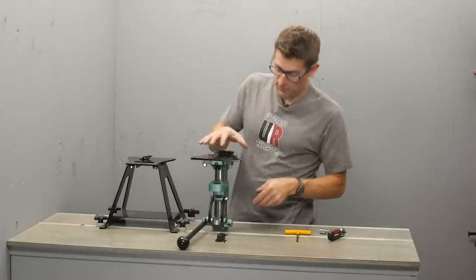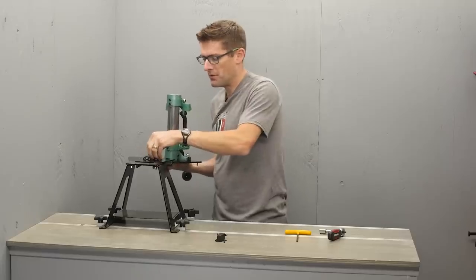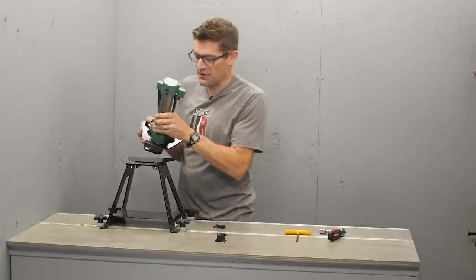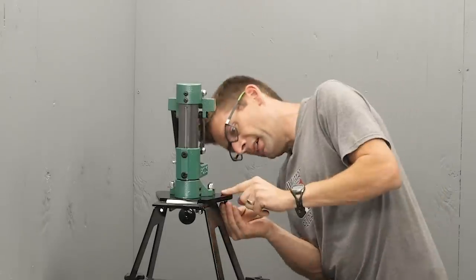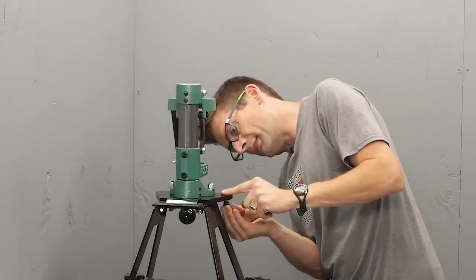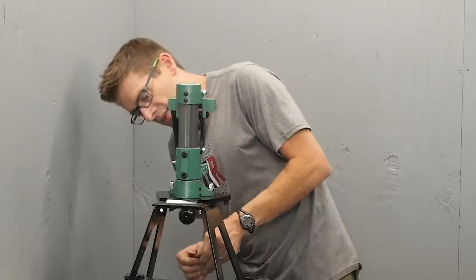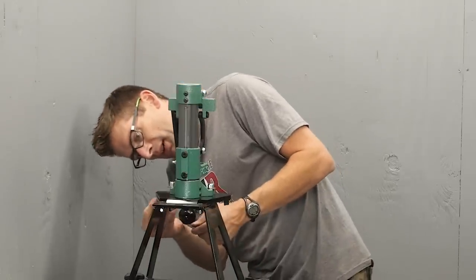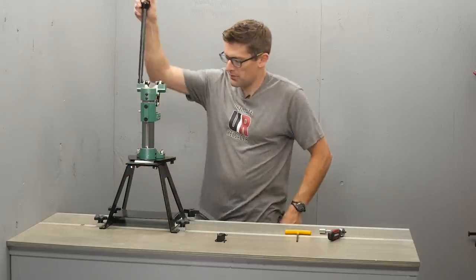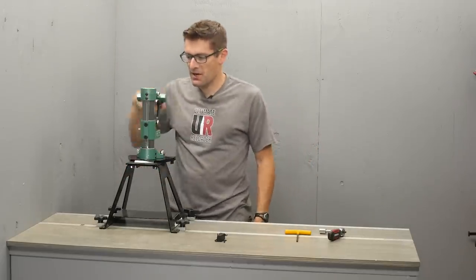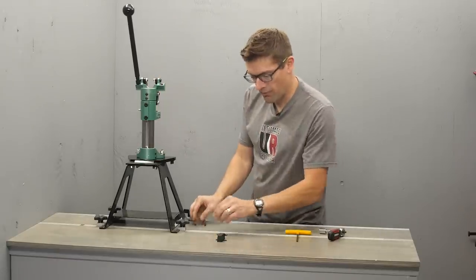And once we have the quick change plate attached, it's a simple matter of turning the press over. We're going to drop the tab in through the slot and then attach the quick change wing nuts. Very quick system. Really like how I can switch between my presses really quick. So there we go. One thing is left and that's to attach the spent primer tray.